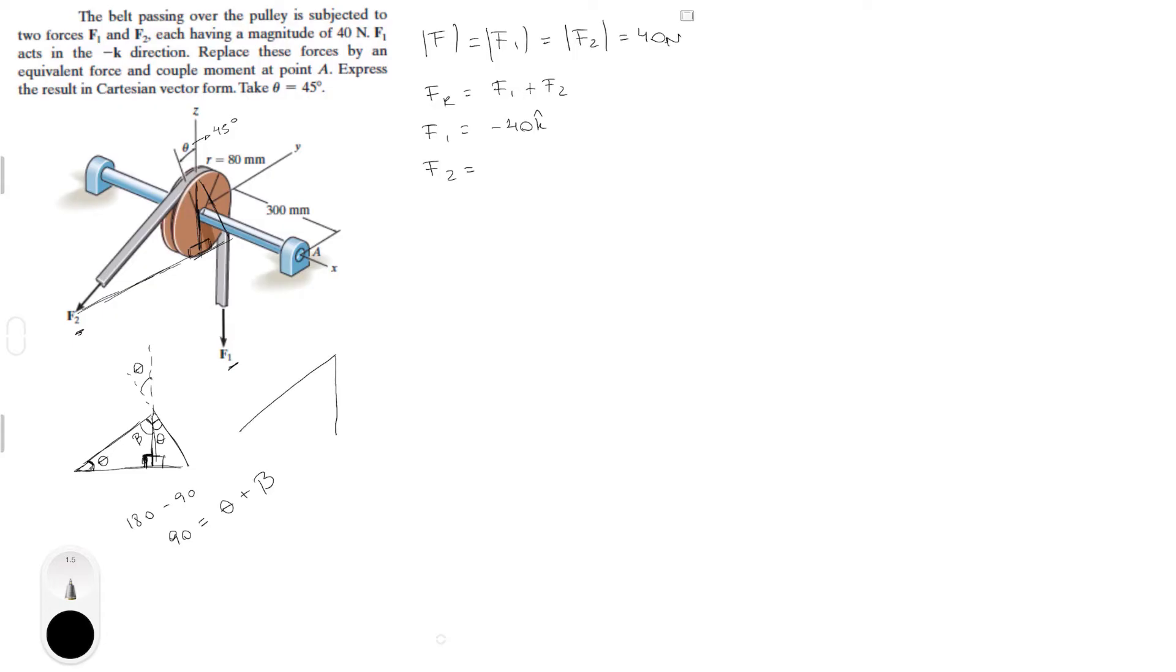Let me redraw the triangle with only the things that we care about. We know that this is theta and this is F2. F2 is sitting in the ZY plane, so it has no X component. This is the Y component, F2Y, and this is the Z component, F2Z. F2 equals 40 newtons and theta equals 45 degrees.